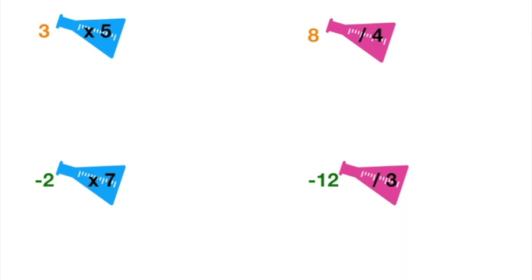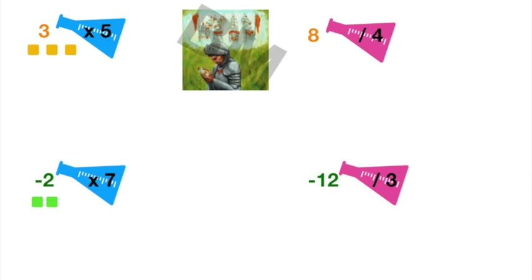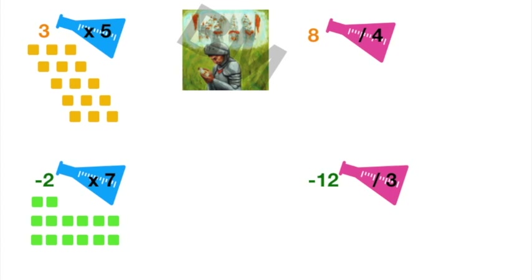In multiplication, I don't have two groups meeting — instead an action is taken on a group. In the top left, one group of three soldiers is duplicated five times. In the lower left, one group of two thieves is duplicated seven times. Pictorially, three times five gives fifteen soldiers — no sign change. Seven groups of two thieves gives fourteen thieves — no sign change. So negative two times seven is negative fourteen.